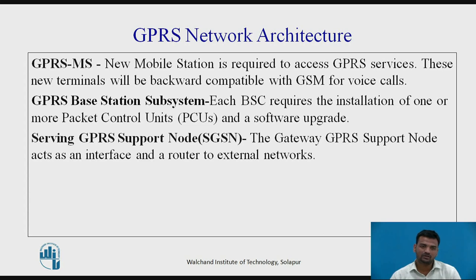The next component is the GPRS Base Station. Each base station requires the installation of one or more Packet Control Units (PCUs) and a software upgrade. The PCU provides a physical and logical data interface to the base station subsystem for packet data traffic. The BTS may also require a software upgrade but typically does not require hardware enhancement — the same hardware with upgraded software can support GPRS.